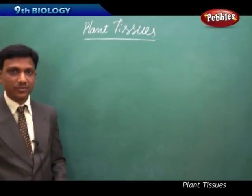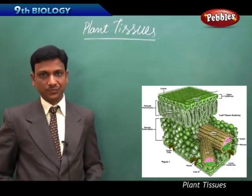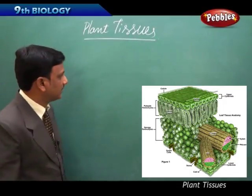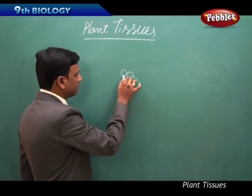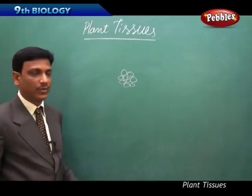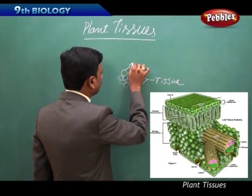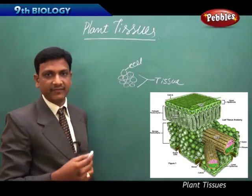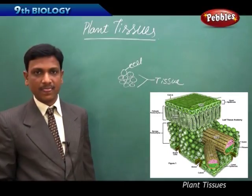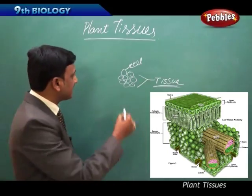Now we are going to the chapter on plant tissues. What is a tissue? A tissue is nothing but a group of cells. We already studied about cells in the previous chapter — we studied the structure and functions of the cell. Now, what is a tissue, and why are cells grouped to form tissues?